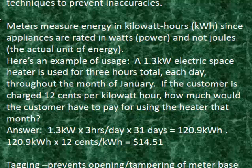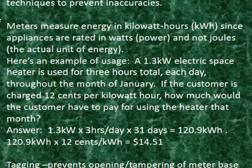Here's an example of usage. A 1.3 kilowatt electric space heater is used for three hours total each day throughout the month of January. If the customer is charged 12 cents per kilowatt hour, how much would the customer have to pay for using the heater that month? You just take the power of the space heater, 1.3 kilowatts, times 3 hours per day, times 31 days — that's a total of 120.9 kilowatt hours. At 12 cents per kilowatt hour, 120.9 times 0.12, you get $14.51.